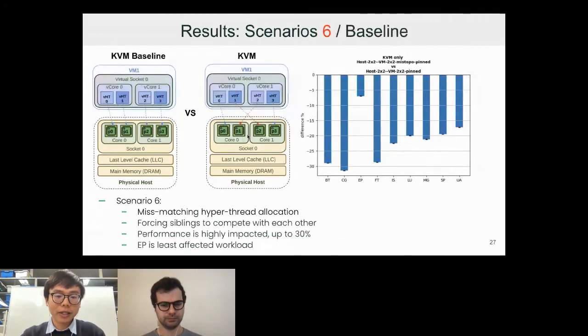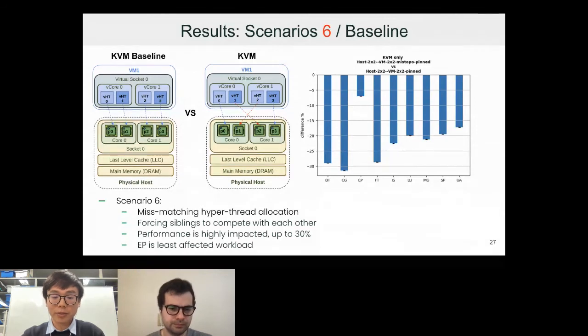For scenario six, we're comparing the case where the Kubvirt issue they had in the past where you have a totally mismatching hyperthread allocation. We're basically forcing the siblings to compete with each other for the resources. For all the benchmarks, you can see there is a significant performance drop, up to like 30 percent.